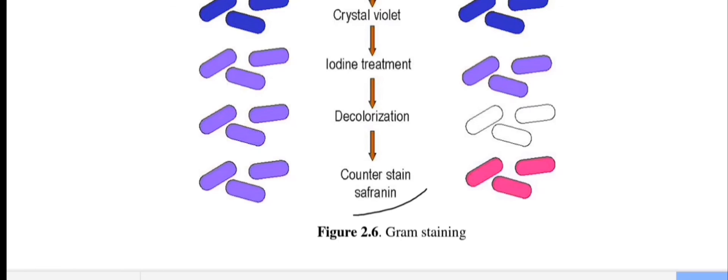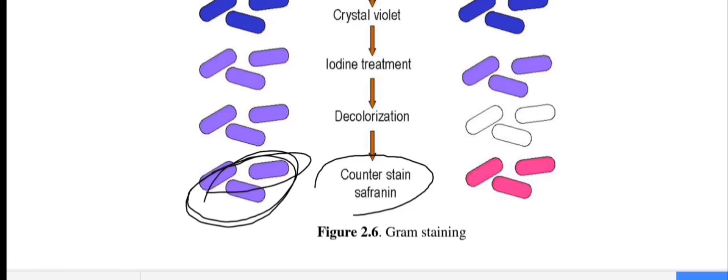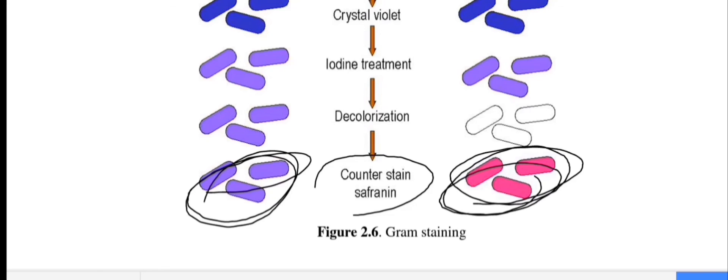The counterstain is safranin. The purple color indicates gram-positive bacteria, and the red color indicates gram-negative bacteria.